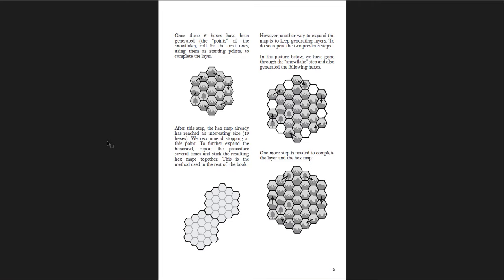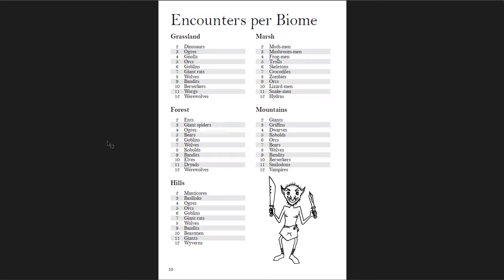You spread out and the recommendation is to link regions together rather than build one really big one — build a couple regions and then link them. There's a recommendation for stopping at 19 hexes, but you could keep going. This is an indefinite process of expansion.